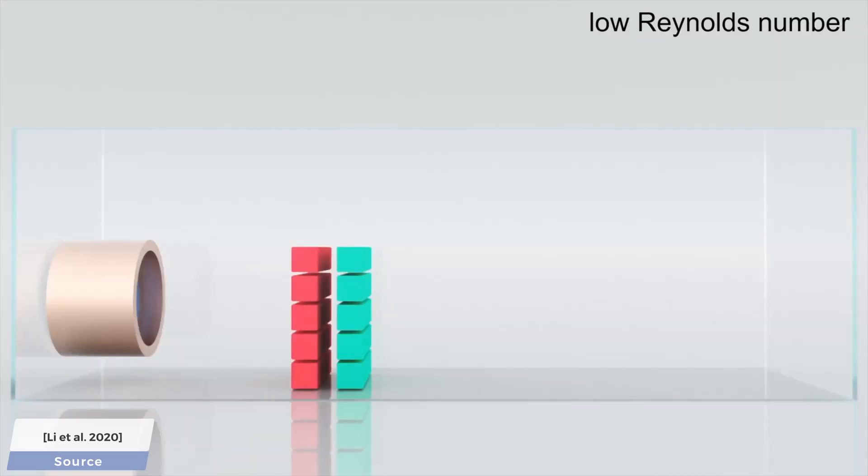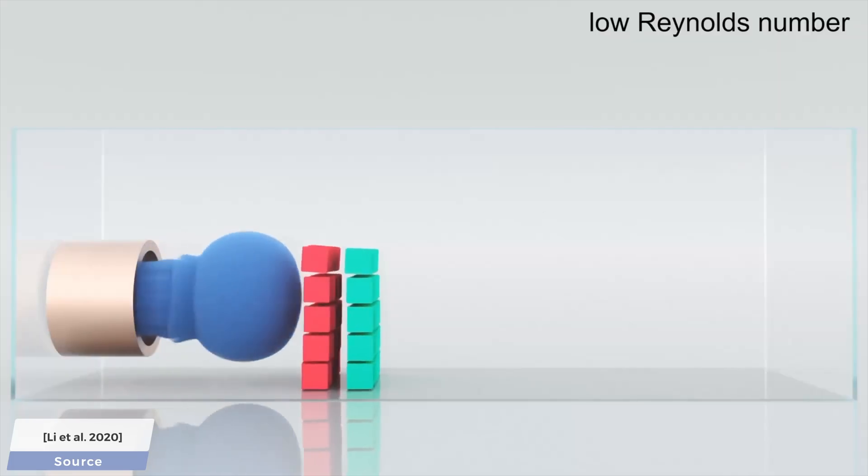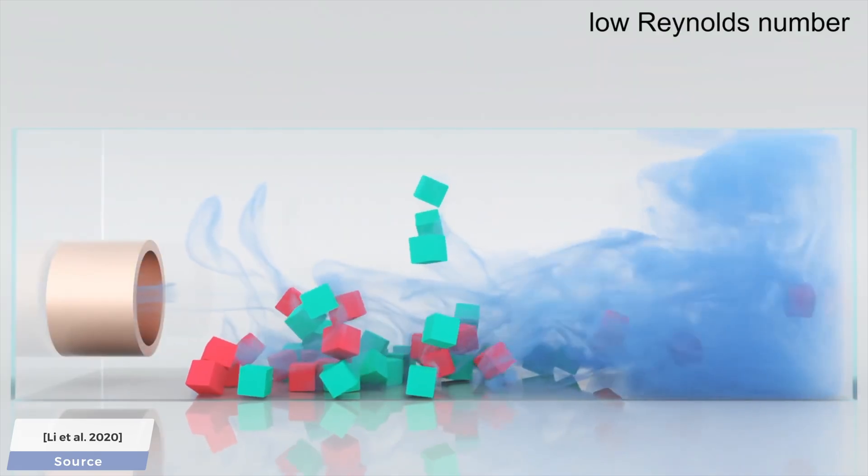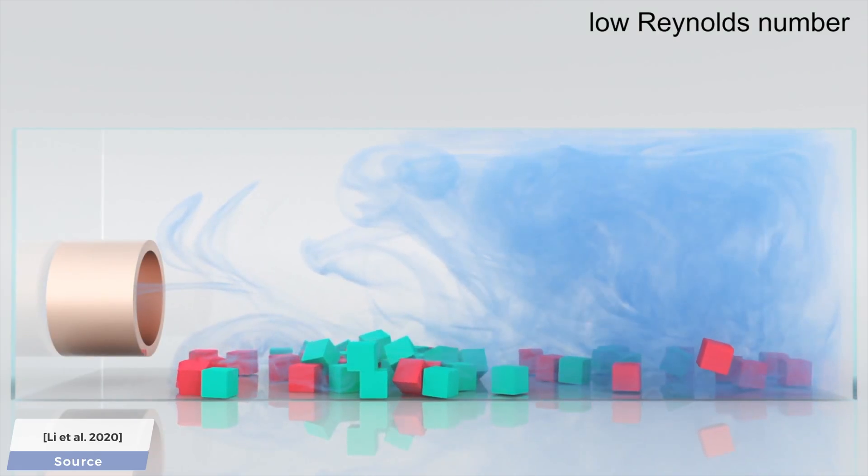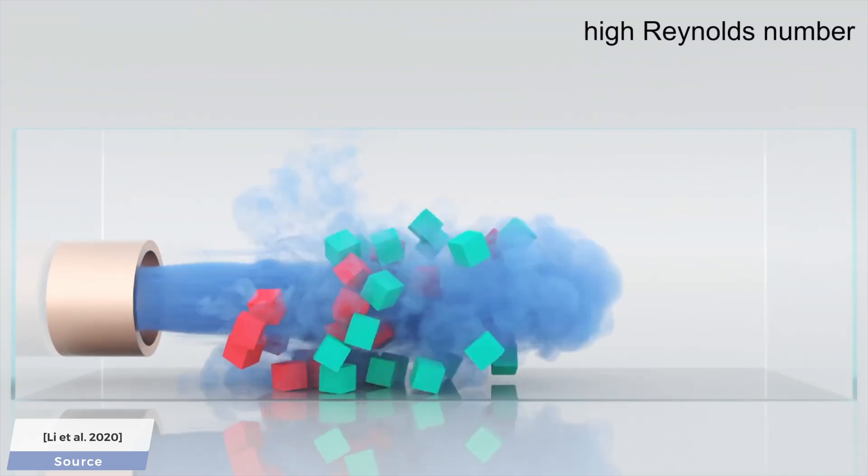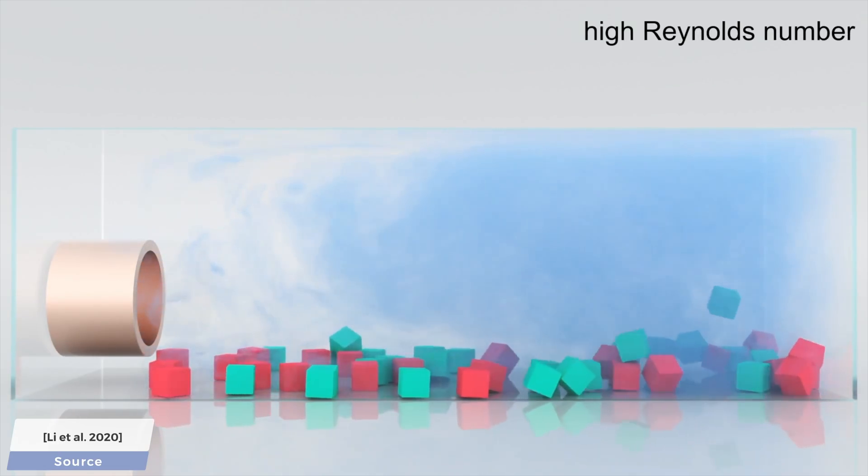And now, on to two-way coupling. In this case, similarly to previous ones, the boxes are allowed to move the smoke, but the added two-way coupling part means that now, the smoke is also allowed to blow away the boxes.